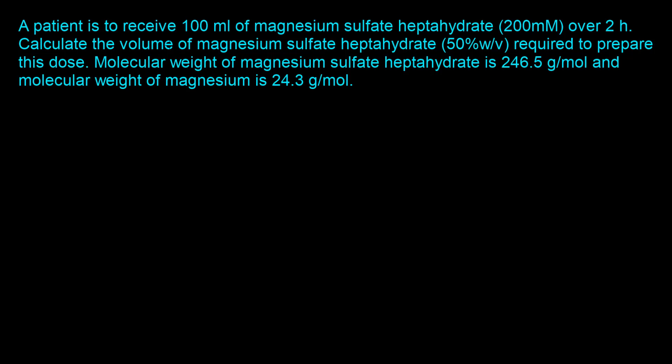This question says a patient is to receive 100 milliliters of magnesium sulfate heptahydrate which is 200 millimolar over two hours. Calculate the volume of magnesium sulfate heptahydrate using a concentration of 50 percent weight by volume required to prepare this dose. The molecular weight of magnesium sulfate heptahydrate is 246.5 grams per mole and the molecular weight of magnesium is 24.3 grams per mole. The goal is to determine the volume of magnesium sulfate heptahydrate at 50% w/v, and I'll show you how to solve this in four straightforward steps.